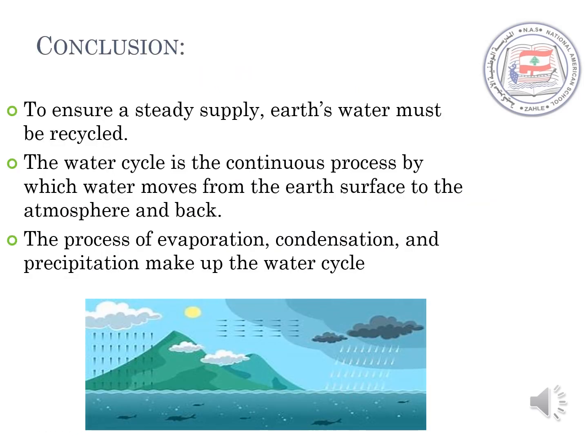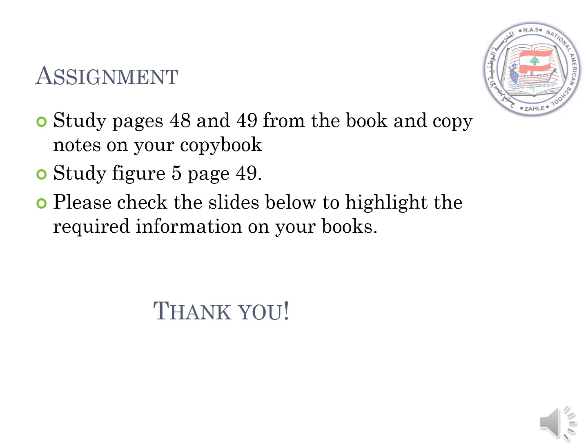As a conclusion, to ensure a steady supply, Earth's water must be recycled. The water cycle is the continuous process by which water moves from the Earth's surface to the atmosphere and then back. The processes of evaporation, condensation, and precipitation make up the water cycle. As an assignment for next time, please study pages 48 and 49 from the book and copy the notes in your copybook. Also, study figure 5 on page 49 and check the slides below to highlight the required information in your books.